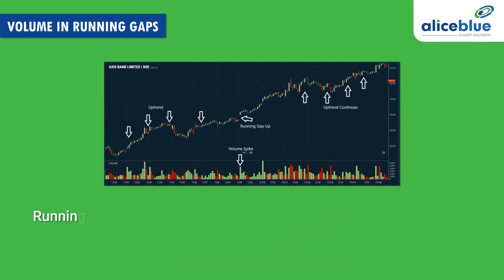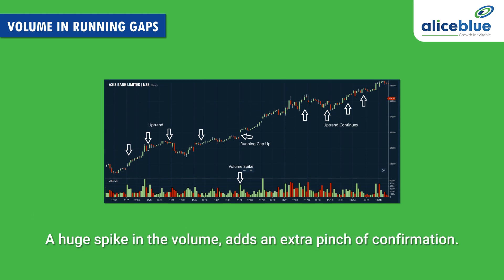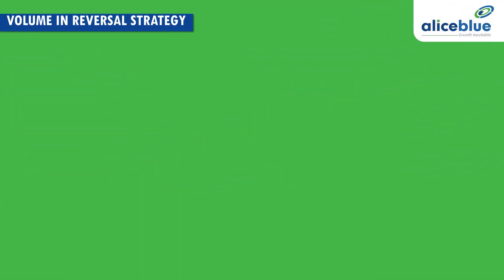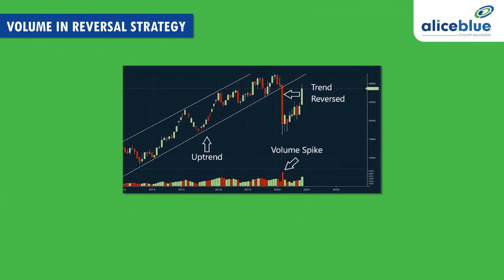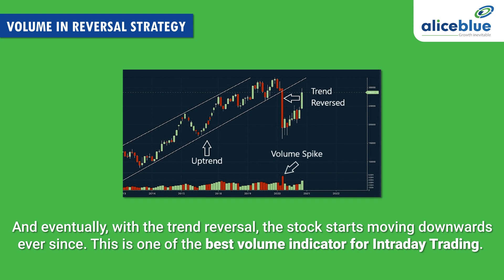Volume in Running Gaps: Running gaps occur in the ongoing trend. You can see in the image that the stock is already in an uptrend and yet a gap up occurs with a bullish candle, indicating a running gap up. A huge spike in the volume adds an extra pinch of confirmation. Volume in Reversal Strategy: A huge fall or rise in the trending stock indicates a reversal. In this image, you can see the trend reverses by forming a big bearish candle. Also, there is a huge spike in the volume which confirms that there is a legit reversal, and with the trend reversal, the stock starts moving downwards ever since.